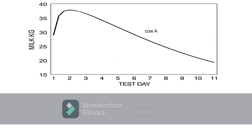If we try to compare lactation curves between two lactating cows — cow A and cow B in this graph as an example — we can say that cow A has a slower rate of decline and is more persistent in milk production than cow B, though both cows have the same peak. This means that compared to cow B, cow A has a better milk production performance. The production difference between the two cows is represented by the shaded area between the two lactation curves.